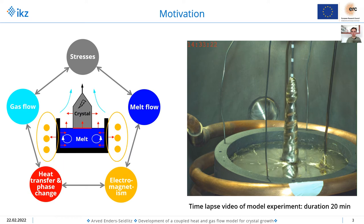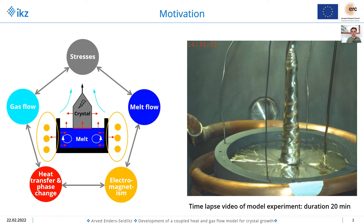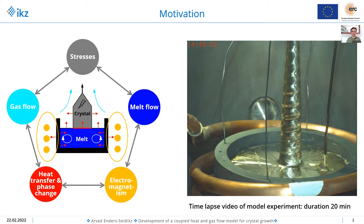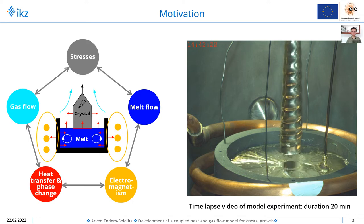Then the seed is pulled upwards and the crystal grows. On the left-hand side in this figure there is the physics visualized that are involved in this process. We have the induction heating, which is a coil around the crucible that has some electromagnetism and generates heat inside the crucible, which is transferred through the melt into the crystal. Around there is gas, so we also have some gas flow. Last but not least, there are thermal stresses inside the crystal that have an important influence on material quality.